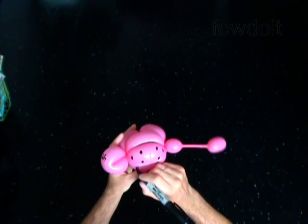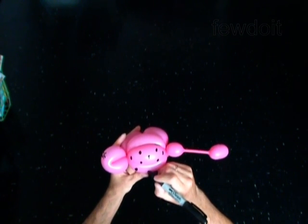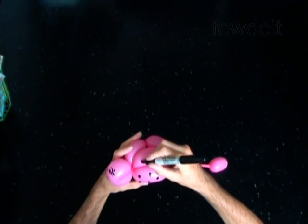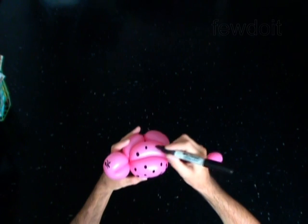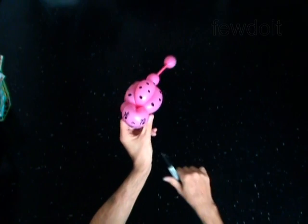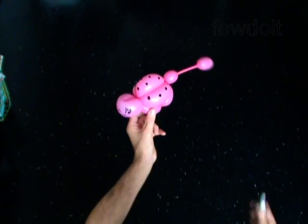You may put the ladybug on the hand by wrapping the tail of the ladybug around the hand. And then you have to just lock the tail around the head. You have made the ladybug.